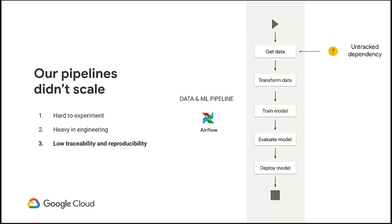The third pain point was traceability and reproducibility. With our system, we didn't have a means of injecting dependencies — data, configuration, or any kind of variance. The data scientists would retrieve these dependencies as side inputs in their pipelines, and these side inputs were almost always untracked. This led to very little reproducibility, because if you rerun that pipeline and those side inputs had changed in the meantime, you'd get different outputs.